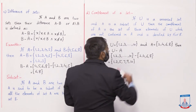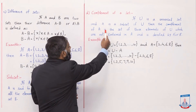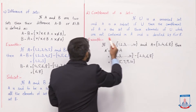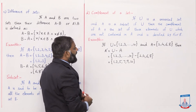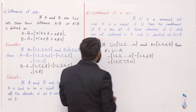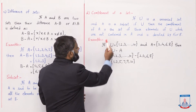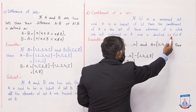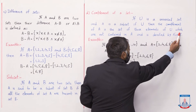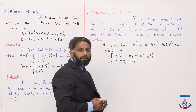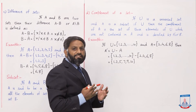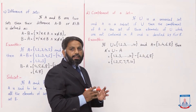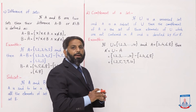Complement of a set: if U is a universal set and A is a subset of U, then the complement of A is the set of those elements of U which are not contained in A, and is denoted by A' or Aᶜ۔ Universal set ایسا set ہوتا ہے جو question میں جتنے بھی sets under consideration ہوتے ہیں ان سب کا super set ہوتا ہے۔